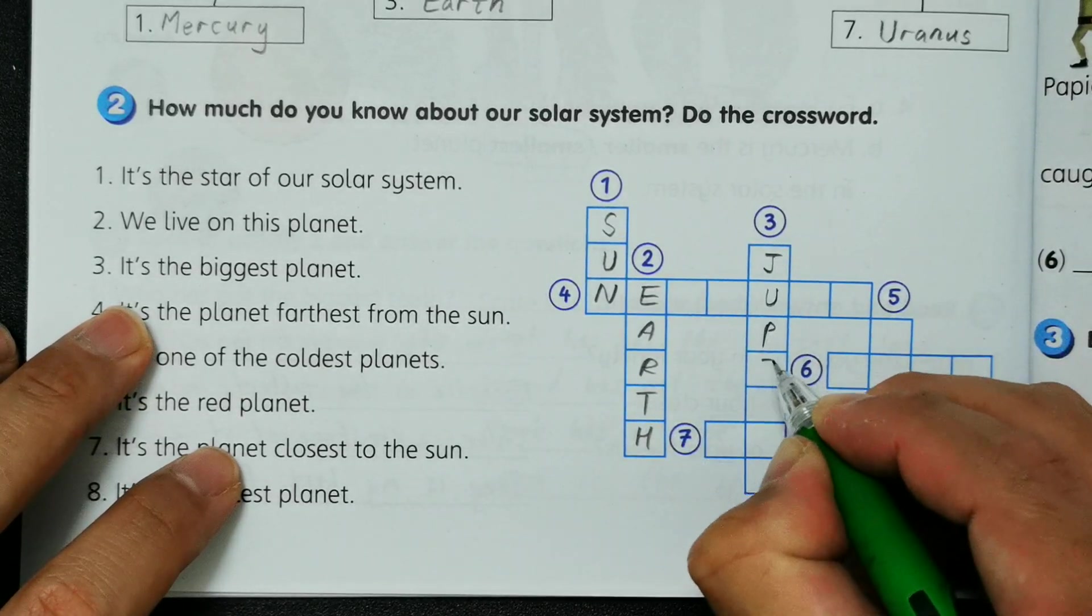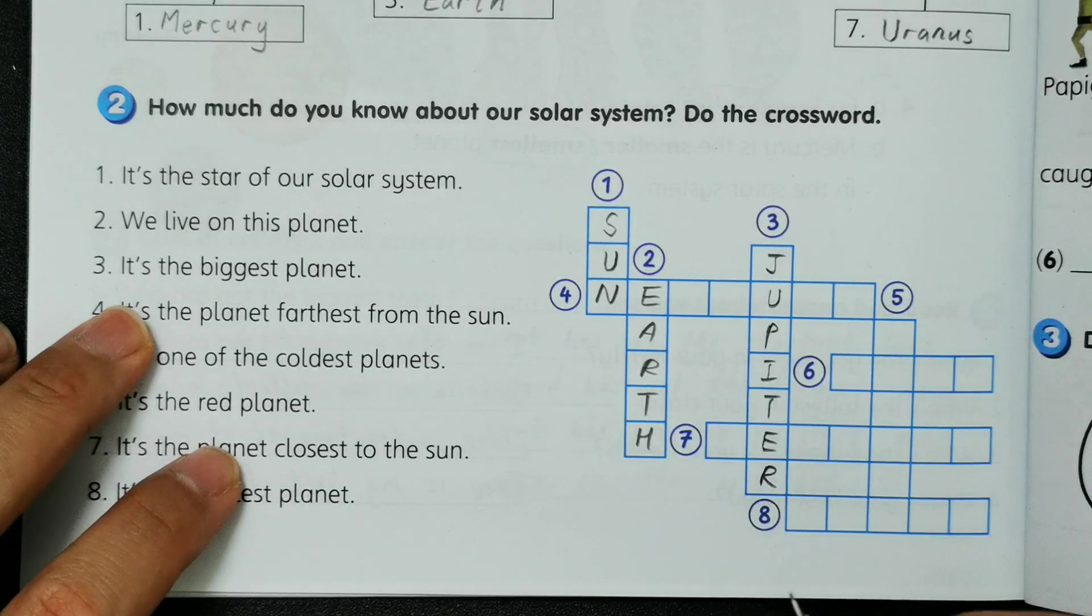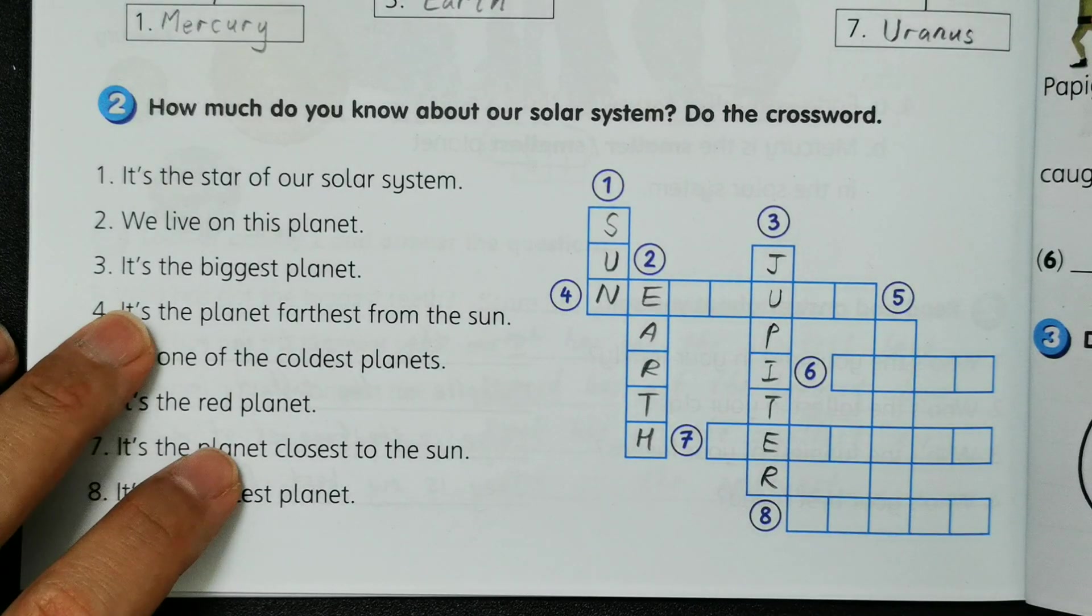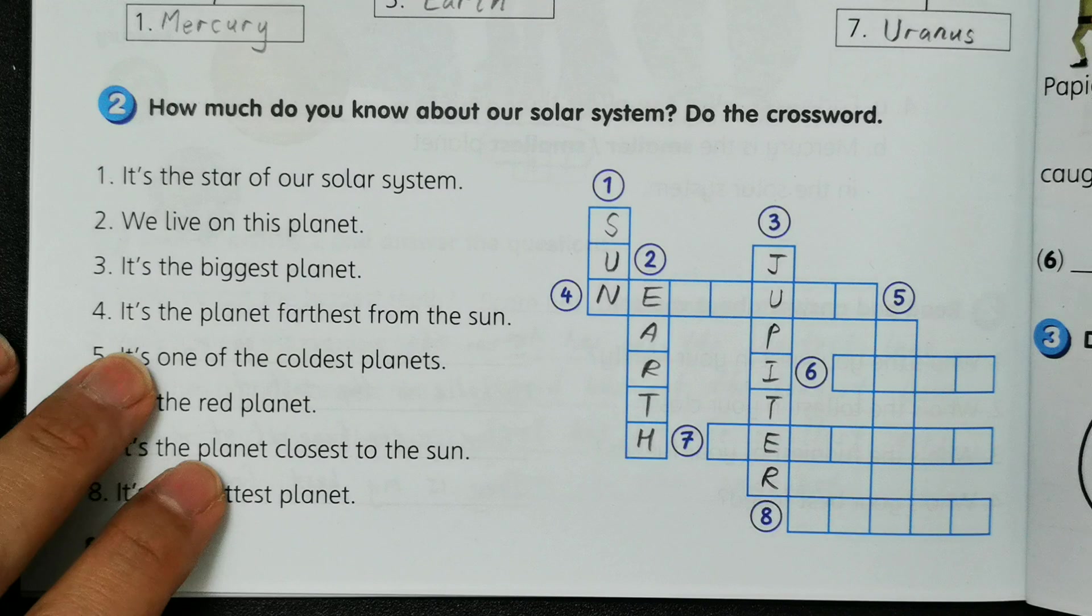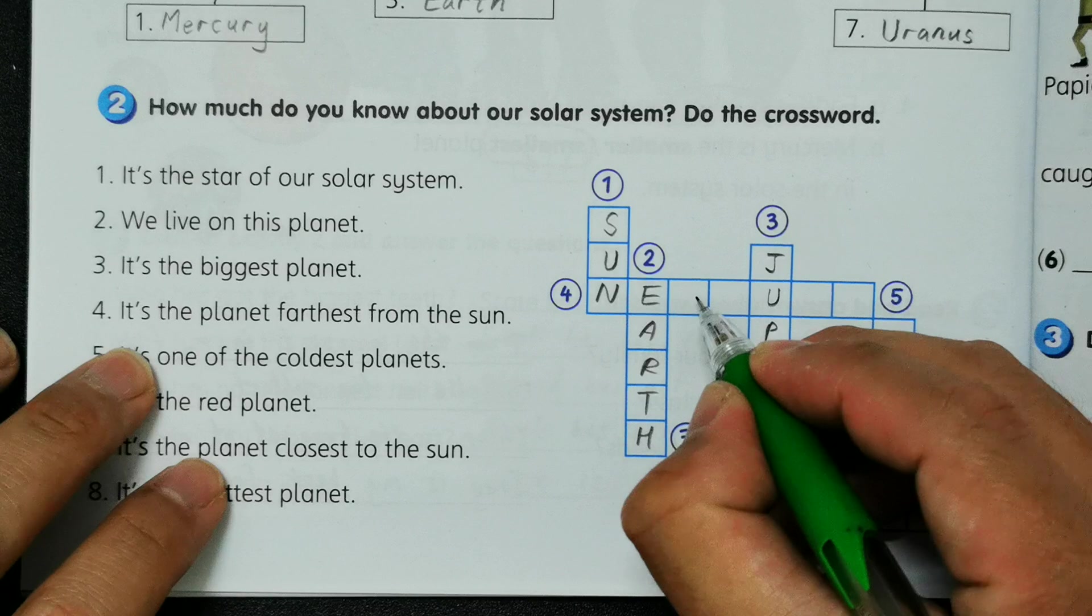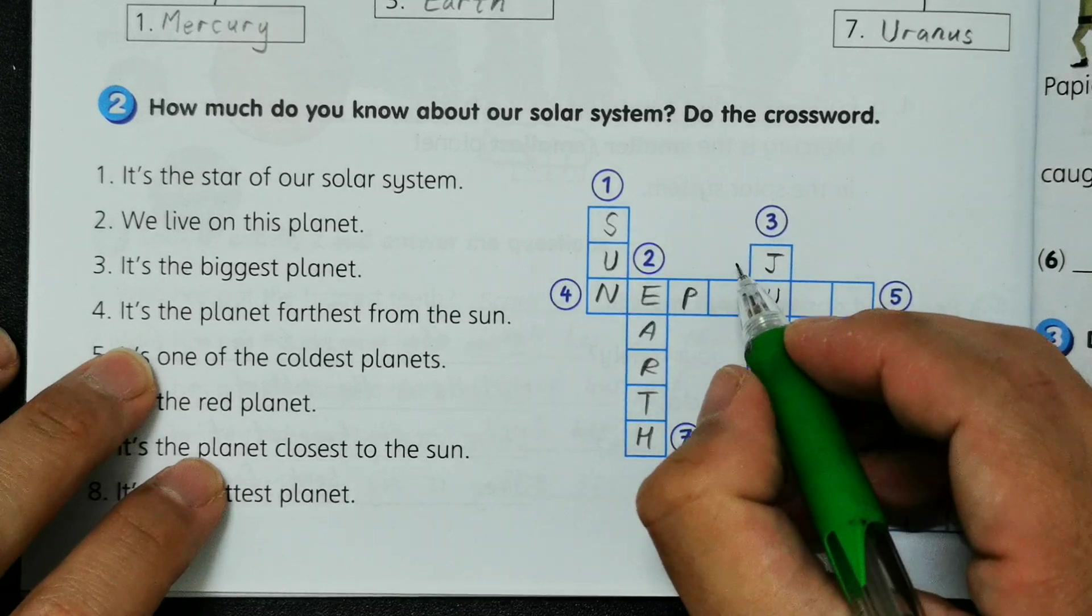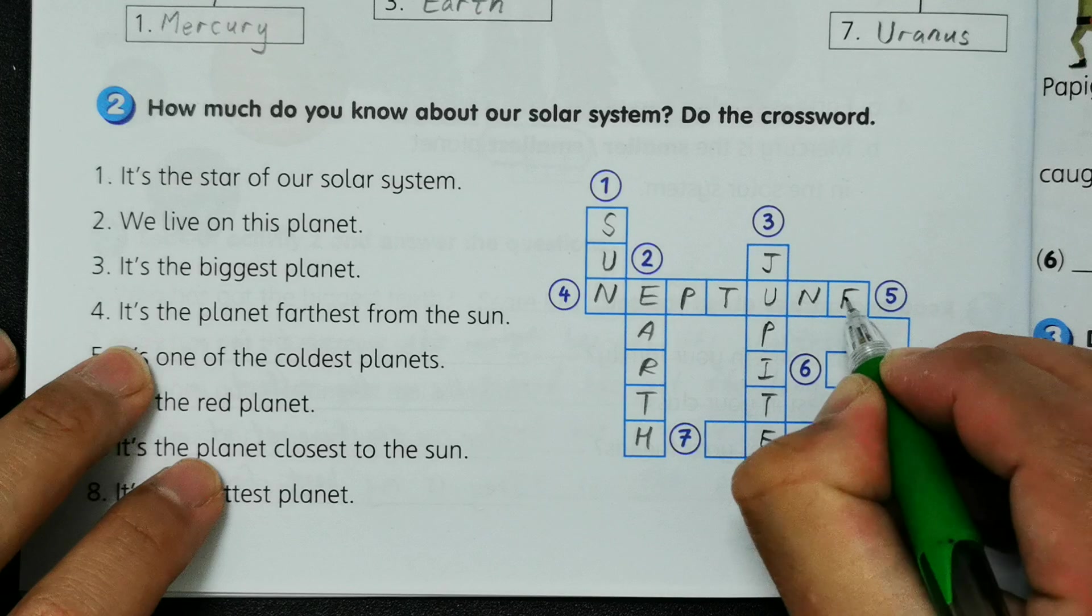And then we have number four, it's the planet farthest from the Sun, so we have Neptune: N-E-P-T-U-N-E, Neptune.